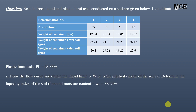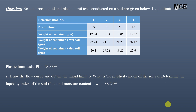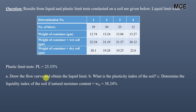Hello and welcome back to Master Civil Engineering. In this video we will learn how to draw a flow curve and obtain the liquid limit of a soil. We have been given the results of liquid and plastic limit tests conducted on a soil. The liquid limit test results are shown in a table with determination number, number of blows, weight of container, weight of container plus wet soil, and weight of container plus dry soil for four tests. The plastic limit is equal to 23.3%.